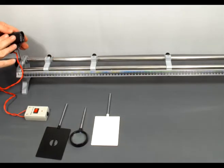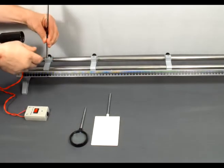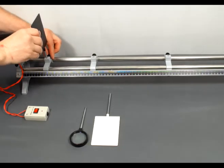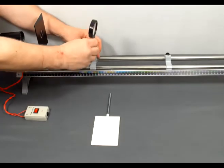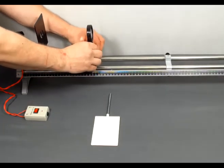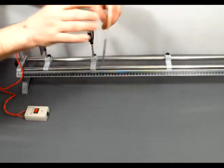So I've got my light source, I have the object, in this case the number one, I have a convex lens, and then I have my projection screen.